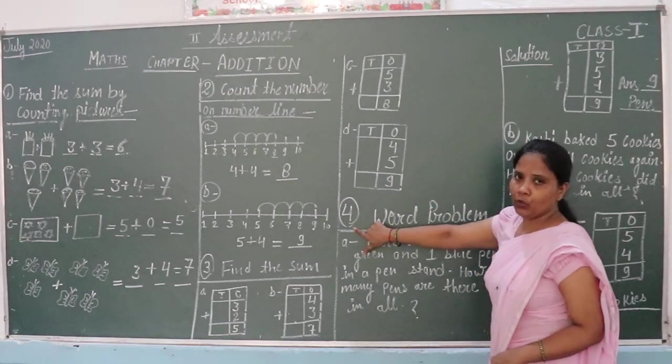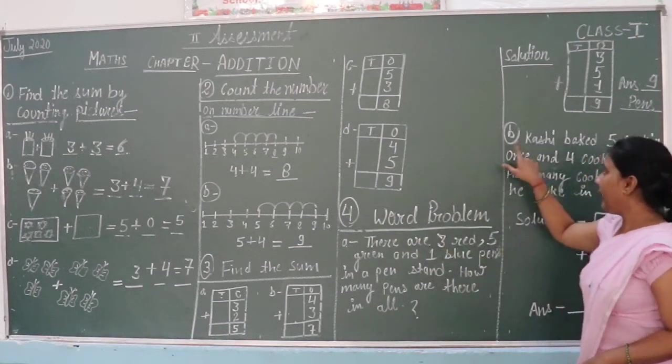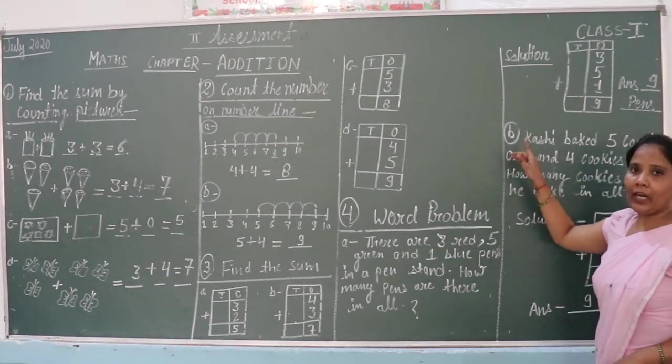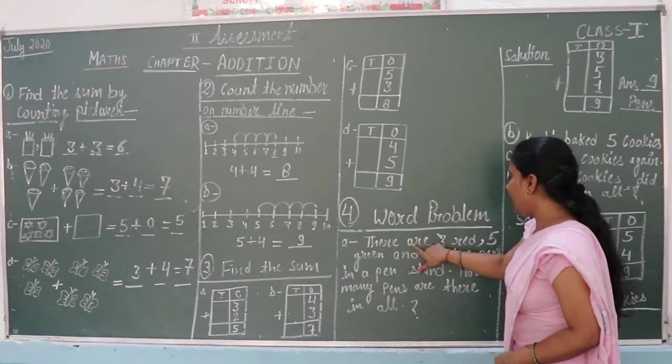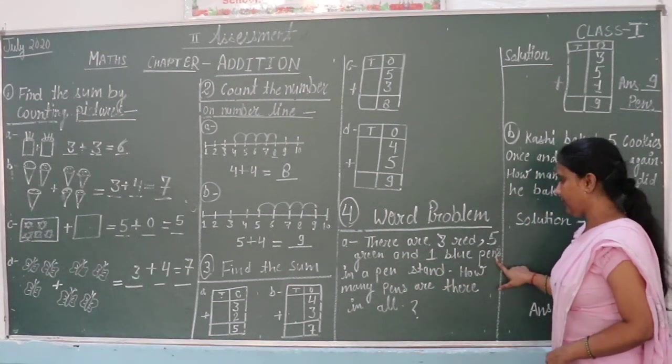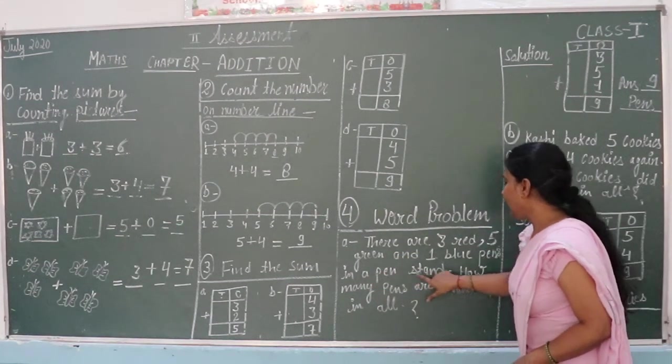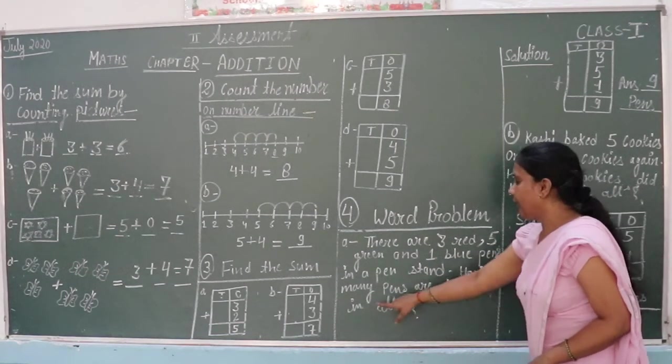Question number 4. You can separate page. There are 2 questions, A and B. There are 3 red, 5 green and 1 blue pen. How many pens are there in all?